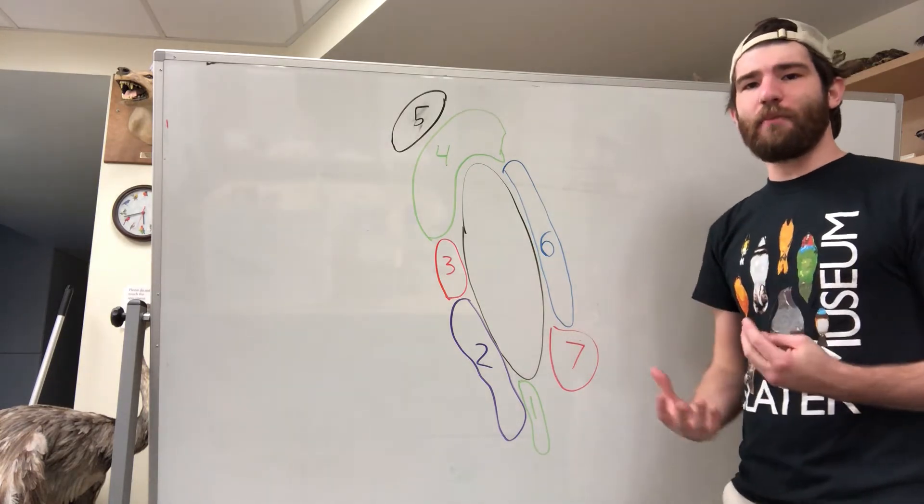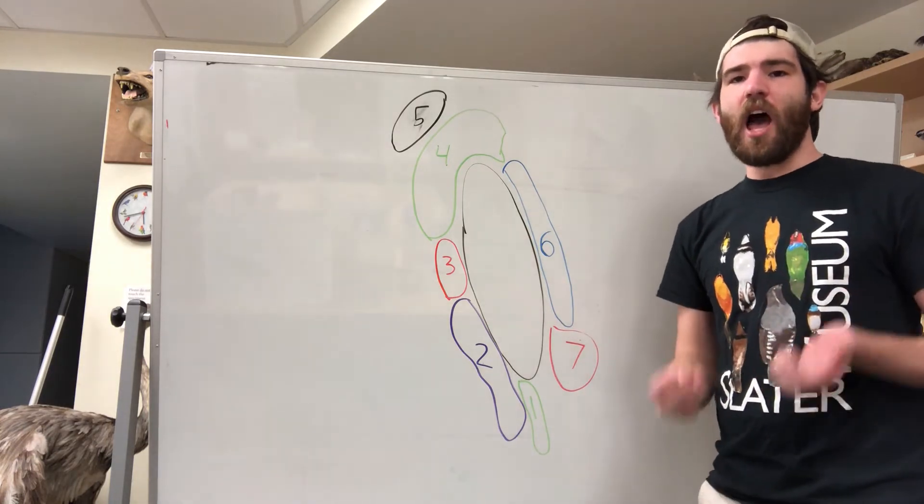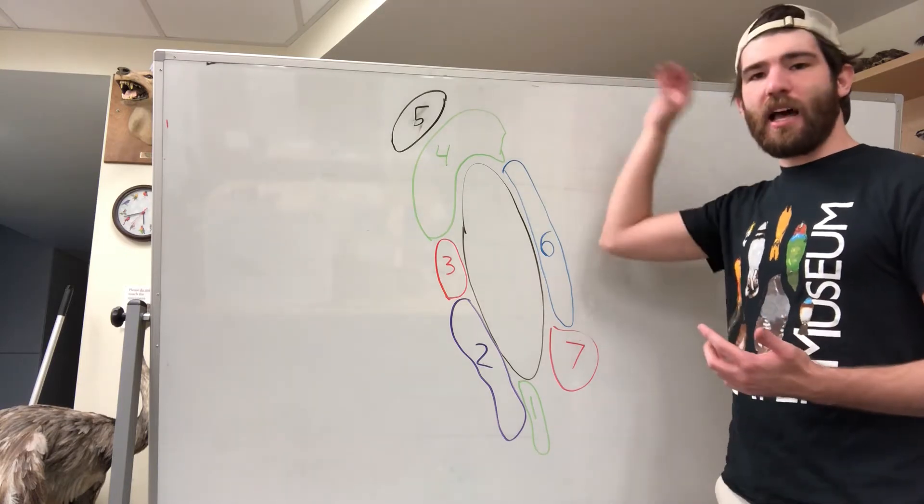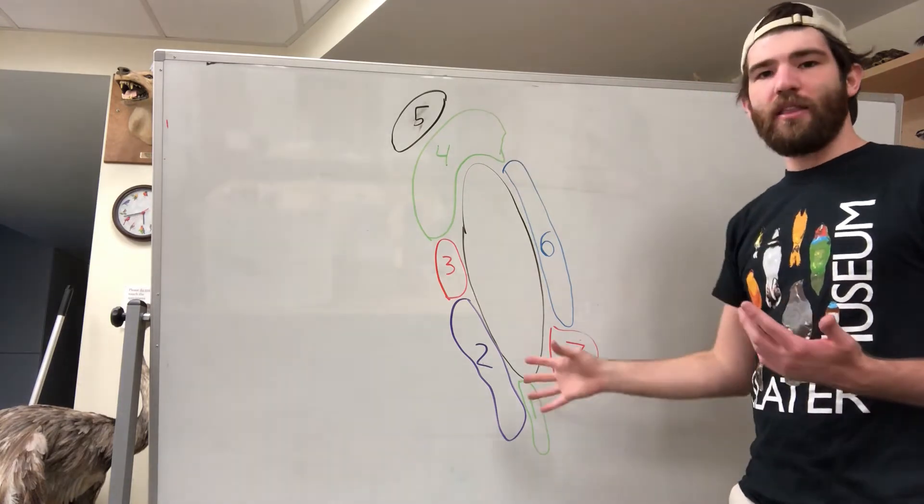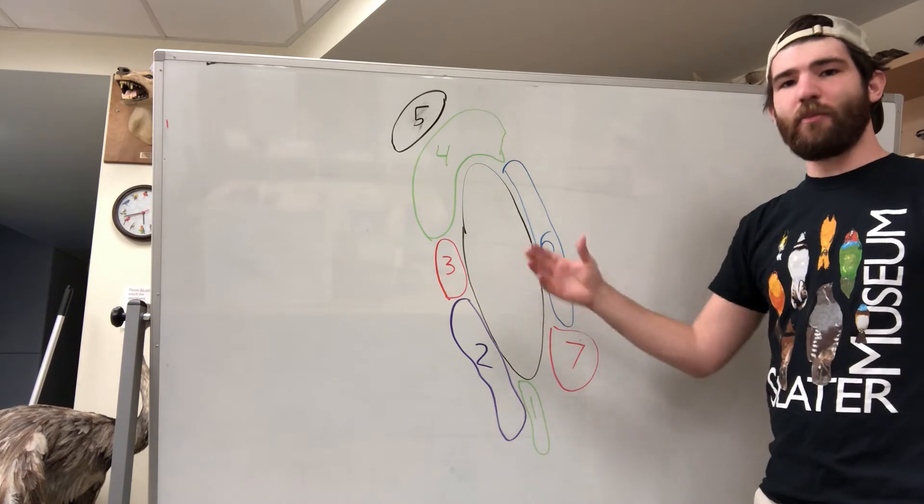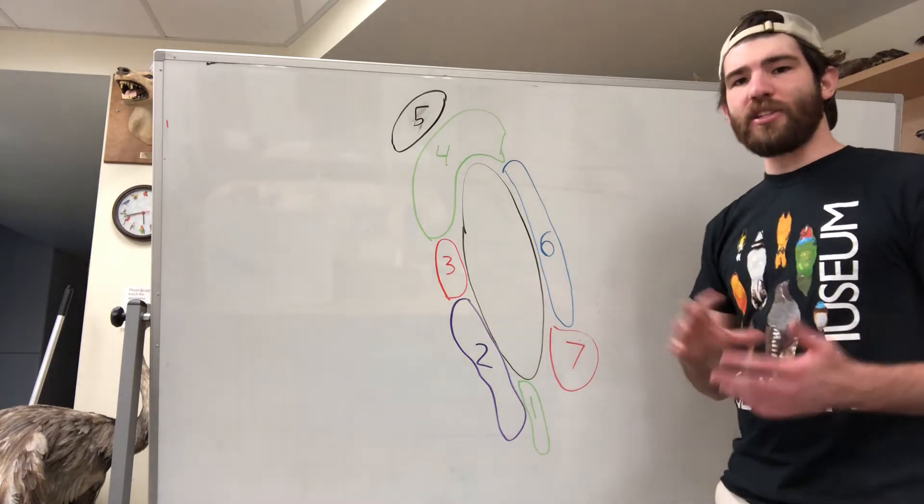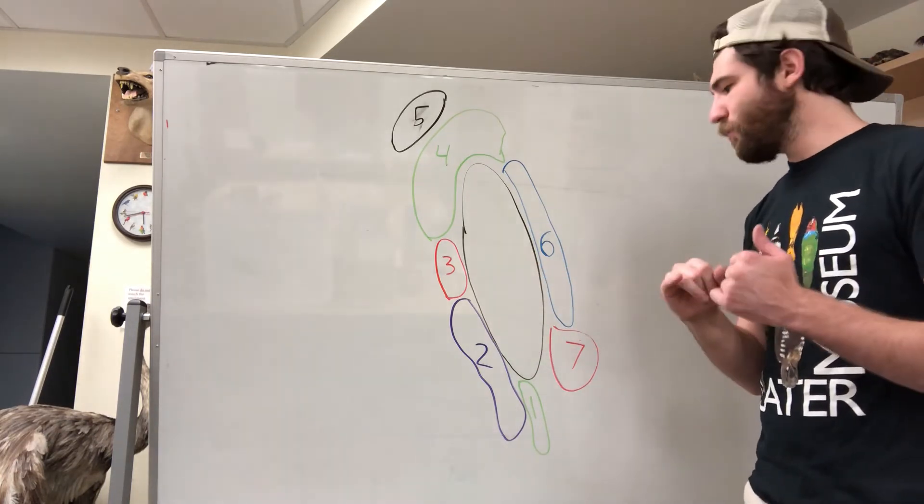So it's a really interesting example that kind of challenges our idea of what the species is, because in this ring around the California Valley, we have seven different populations of these salamanders and the populations can interbreed only at certain points.